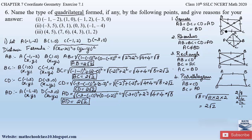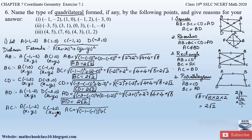Let us find diagonal AC. Assuming A as (x₁, y₁) = (−1, −2) and C as (x₂, y₂) = (−1, 2): AC = √[(−1 − (−1))² + (2 − (−2))²] = √[(0)² + (4)²] = √(0 + 16) = √16 = 4. So diagonal AC equals 4.